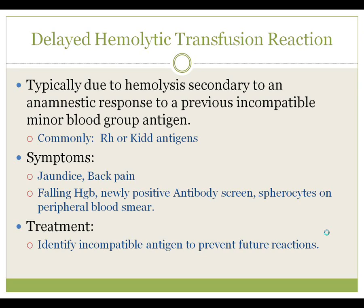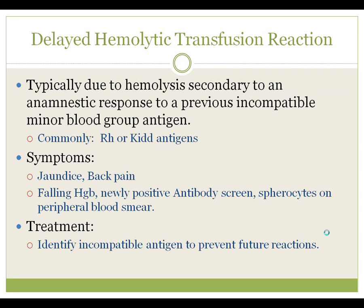A delayed hemolytic transfusion reaction is something a little bit different and may not be a nighttime emergency, but may occur from a previous transfusion. Generally, these are transfusion reactions which occur several days to weeks later and are related to a previously unknown antibody which had an anamnestic response to the transfused blood, followed by a delayed hemolysis related to that new antibody. These are commonly RH group or Kidd antibodies. The symptoms are largely confined to back pain or jaundice, a drop in hemoglobin is regularly seen in labs, and a newly positive antibody screen is also seen. On a peripheral blood smear, spherocytes are the common finding.